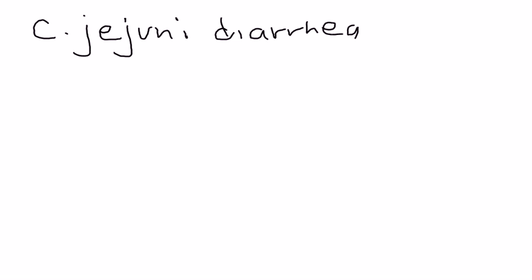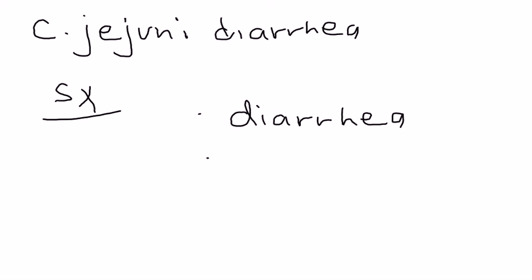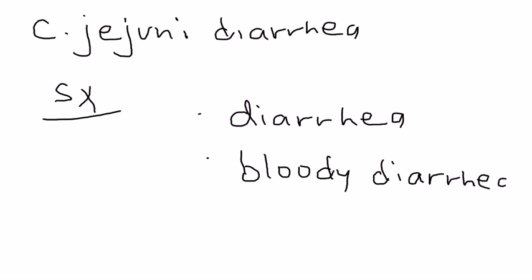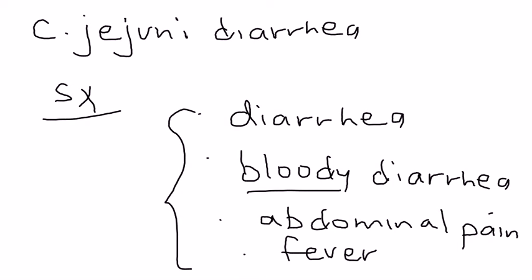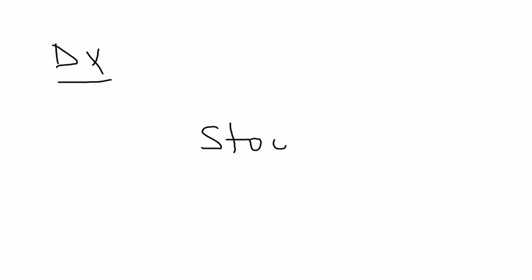Let's talk about symptoms of C. jejuni diarrhea. Key differentiating features include: bloody diarrhea (not all diarrhea is bloody — some is just watery), abdominal pain, and fever (not all types of diarrhea will have fever). Hopefully these symptoms, along with a history of ingestion of poultry or chicken, will be present in the vignette and guide you to the correct answer.